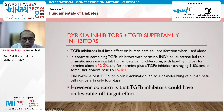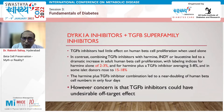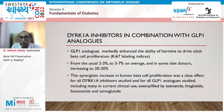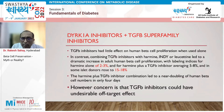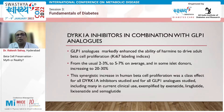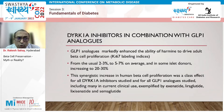When harmine (a DYRK1A inhibitor, which increases proliferation to 2-3%) is combined with a TGF-beta superfamily inhibitor, proliferation increases to almost 15-18%. However, TGF-beta inhibitors could have many undesirable off-target effects because they are involved in several cellular processes. Therefore, safer molecules were investigated.